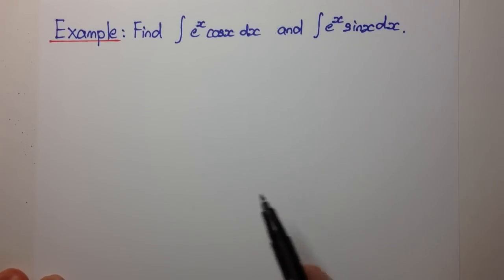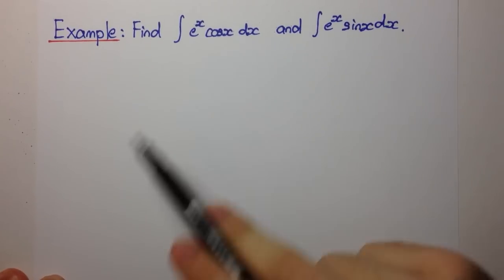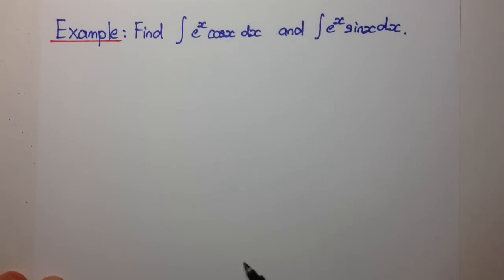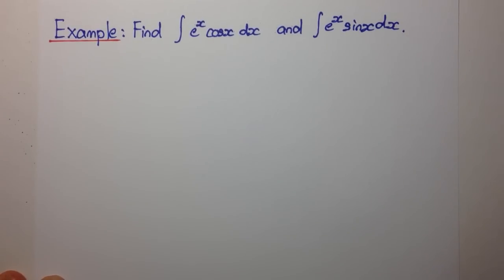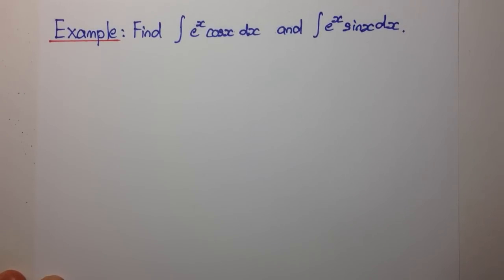When we look at this we see it's a product of functions in both cases, so it might suggest that we use integration by parts. But there is another more interesting way of computing these two integrals, and it involves the use of Euler's theorem.